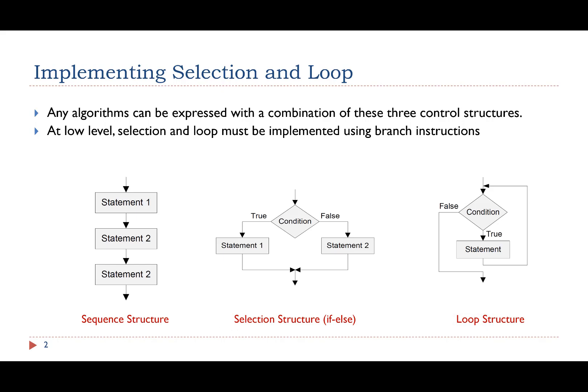The sequence structure means that all statements in a program run in sequential order by default. The selection structure includes statements if, if-else, and switch in the C language. The loop structure includes for and while statements.